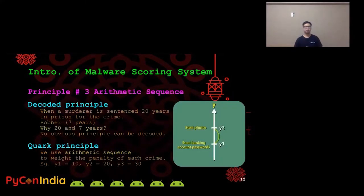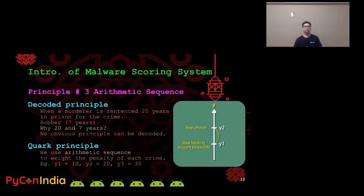Now let's see principle number three: arithmetic sequence. In criminal law, when a murderer is sentenced 20 years in prison and a robber is sentenced 7 years in prison for his crime — why 20 and 7 years? We found no obvious principle in criminal law. So we use arithmetic sequence to weight the penalty of each crime. For example, the penalty weight of y1 is 10, y2 is 20, y3 is 30, etc.